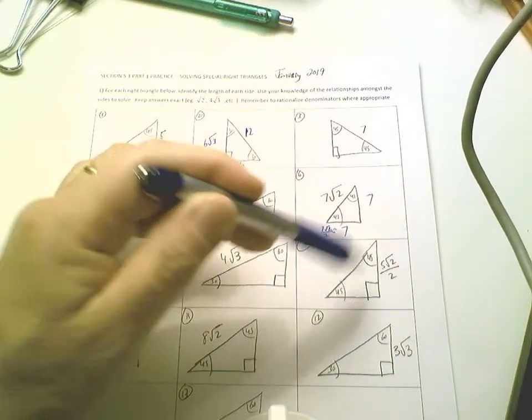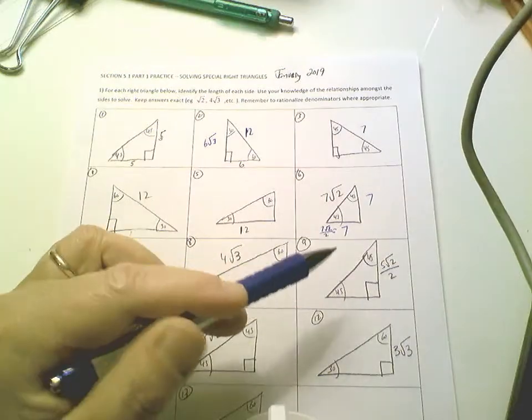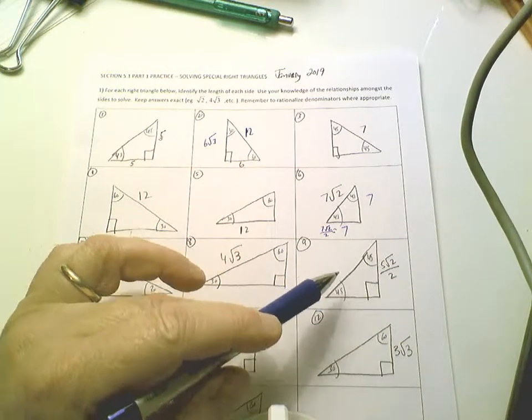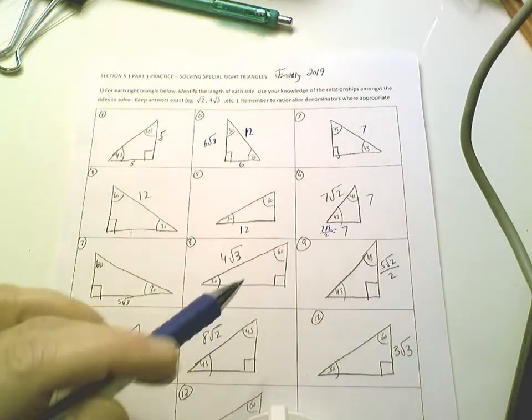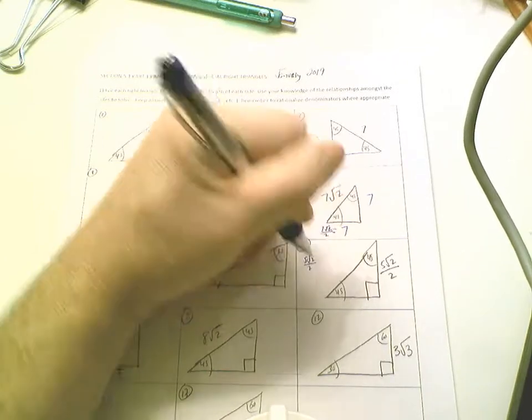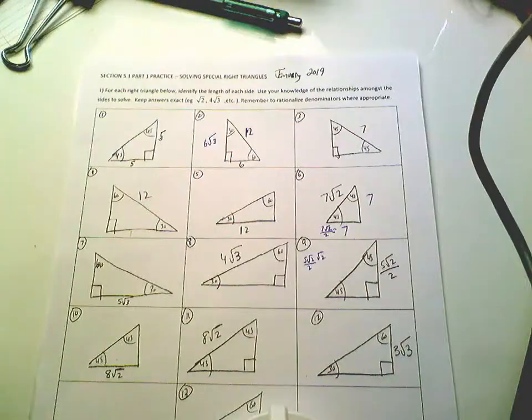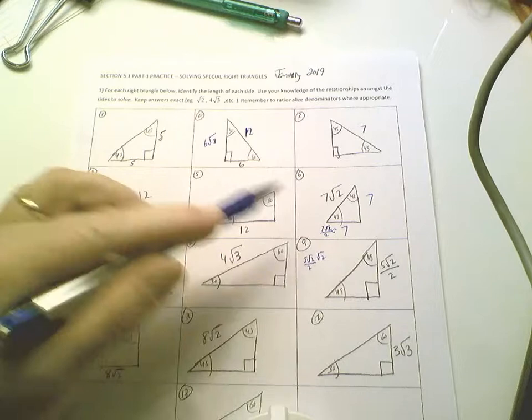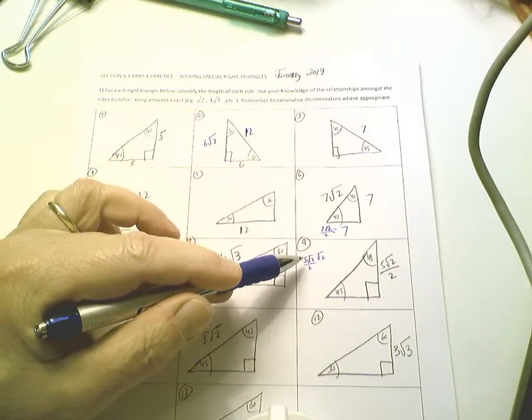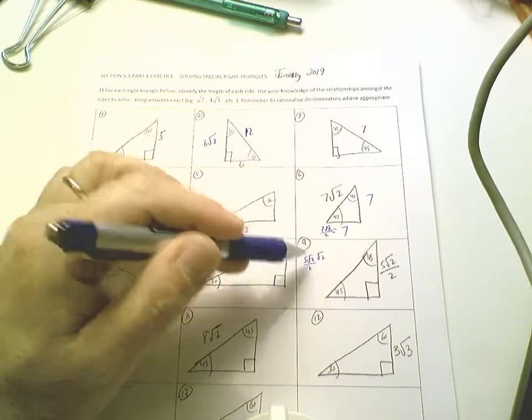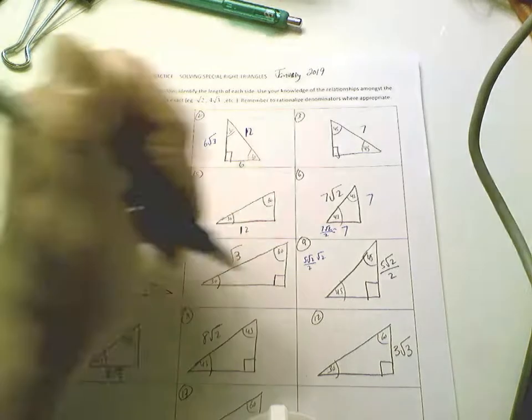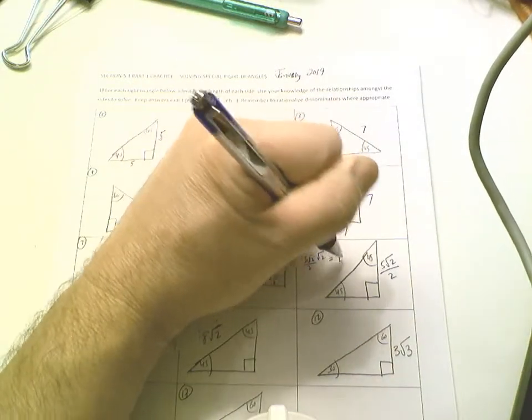A 45-45-90 triangle with 5 root 2 over 2 as the short side. What do I do? Multiply by the square root of 2. I have 5 root 2 over 2 times root 2. Root 2 times root 2 is 2, times 5 is 10, divided by 2 equals 10 over 2, or 5.